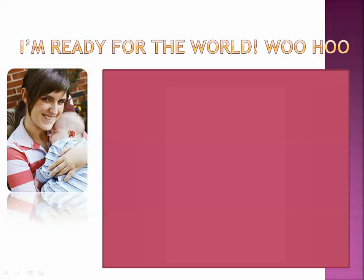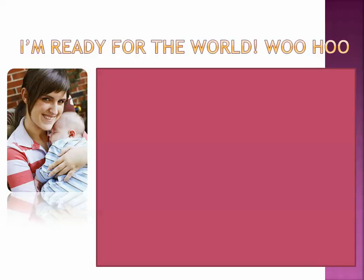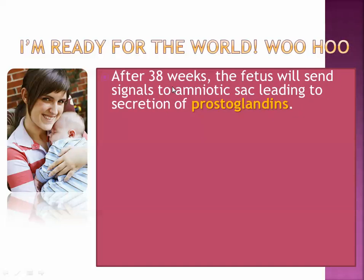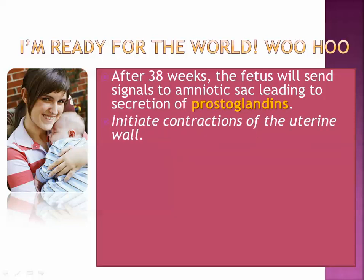Finally, you're ready for the world — you've been causing a lot of trouble for nine months. After 38 weeks, the fetus will send signals to the amniotic sac, and you start secreting a chemical called prostaglandins. These prostaglandins will start to initiate contractions of the uterine wall. This is an example of positive feedback — one of the easiest examples of positive feedback in biology. Normally it's all about negative feedback. Homeostasis is all about negative feedback mechanisms, where the outcome of something will serve to have the opposite effect of whatever process caused that outcome.